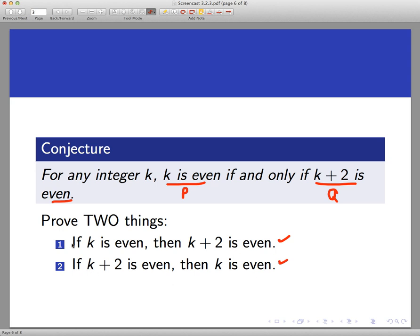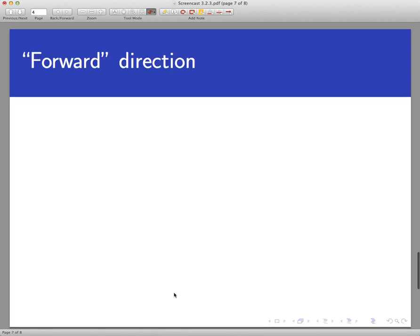We are going to do a direct proof of each of these parts here. Now notice each half of an if and only if proof is a proof of a conditional statement. So we could do that either by a direct proof, or in some cases we might do this by proof by contraposition. We are going to do both of these if-then proofs directly this time. So let's do the first one.